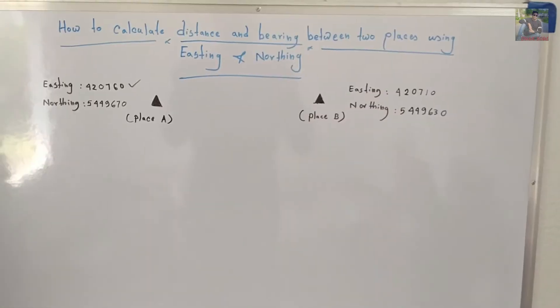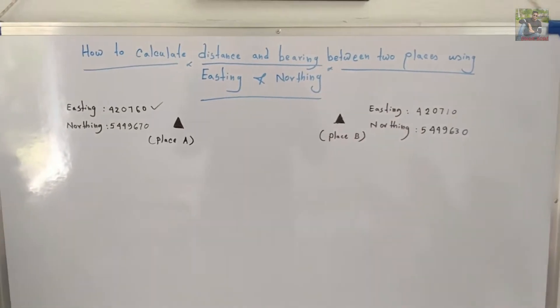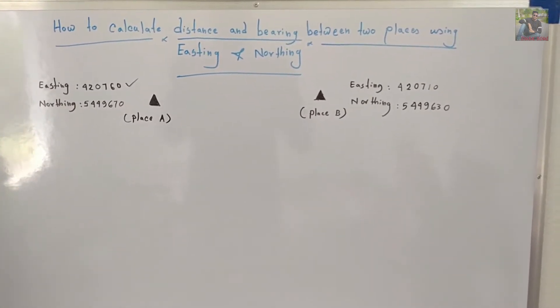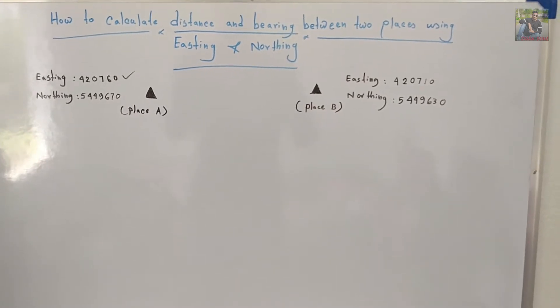Two places are there, A and B. Place A having easting of 420760, northing 5449670. Place B, easting 420710, northing 5449630.